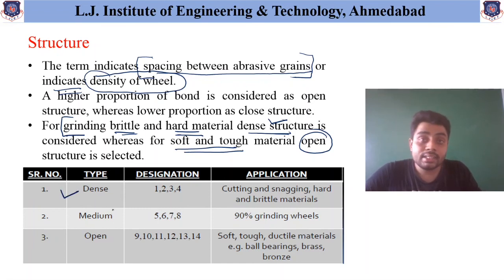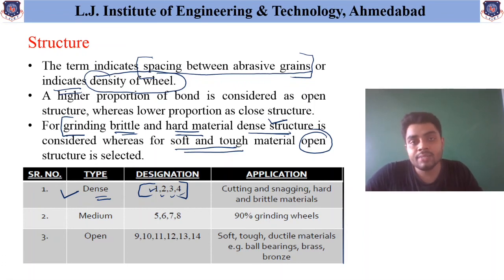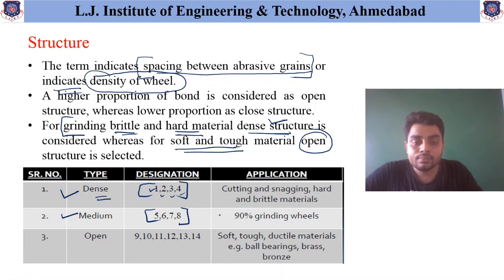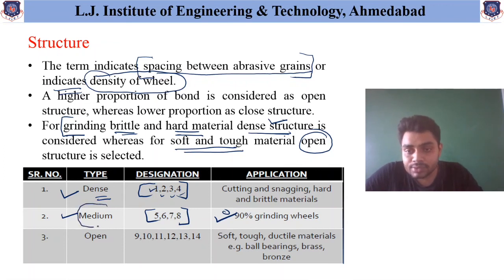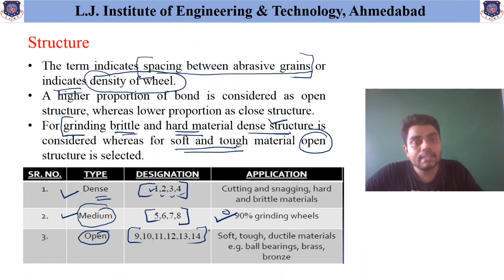For a dense structure, the designation in the grinding wheel specification may be 1, 2, 3, or 4, and it is applicable for cutting, snagging, and finishing of hard and brittle materials. If the structure is medium with a range of 5 to 8, these are used in 90 percent of grinding wheels in general cases. Open structure has a range from 9 to 14 and is used for soft, tough, and ductile materials such as brass and bronze.